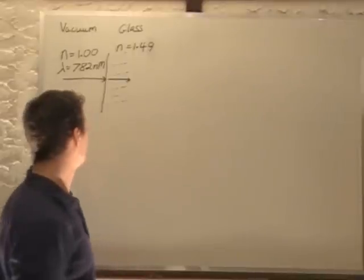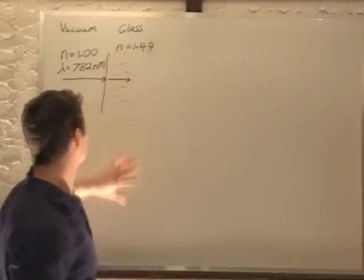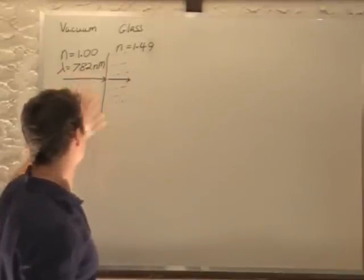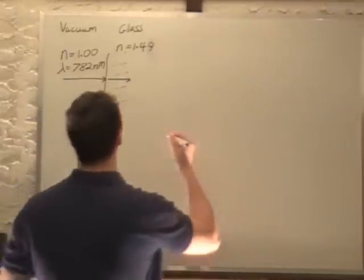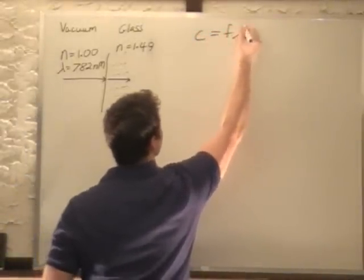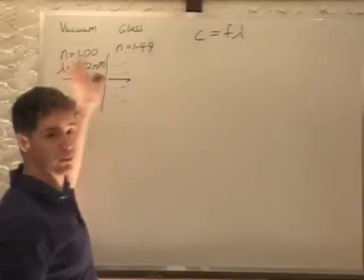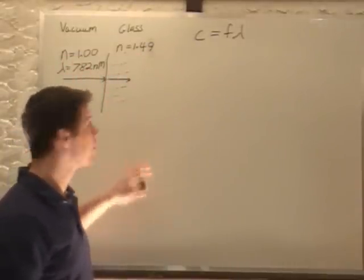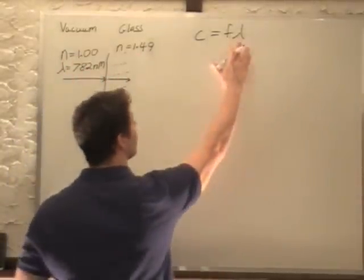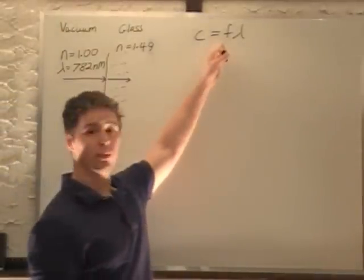Now we want to find the wavelength and frequency in both cases. Well, actually just in the glass, because we already know the wavelength for the vacuum. We know that c equals f lambda. The speed of light will change depending on the index of refraction, what medium we're in, and the wavelength will change. But frequency will remain the same.